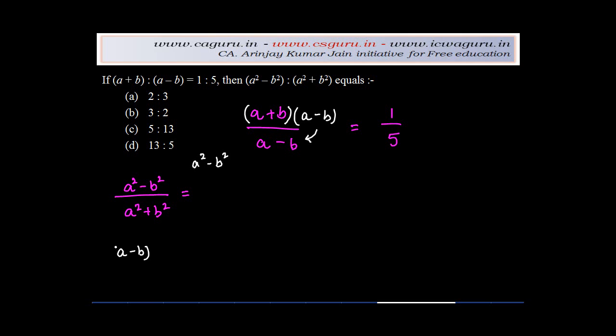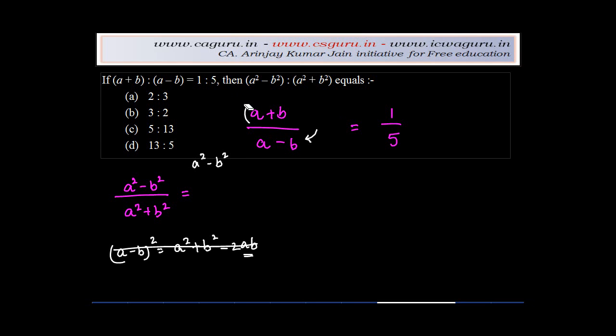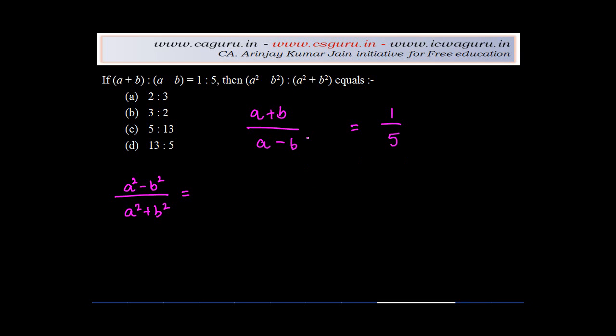But the moment you do that in the denominator, you will end up having (a-b)² which is a²+b²-2ab. But we don't know the value of 2ab, and hence this will not work. So we cannot multiply this entire thing by (a-b). But then what do we do? We have to solve this, right?